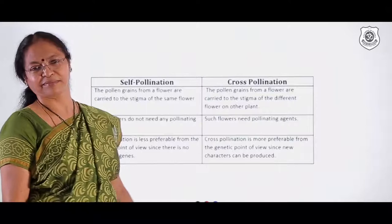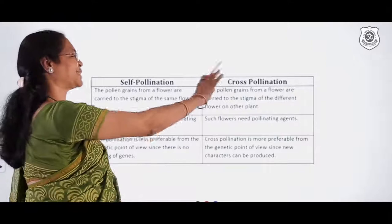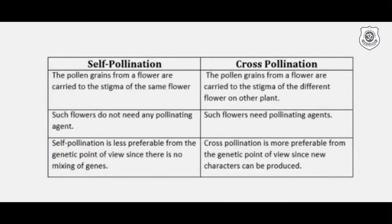What is the key difference between self and cross pollination? For self-pollination, no external agent is required. For cross-pollination, an agent is definitely required. Self-pollination is preferable because it can maintain pure lines and a homozygous condition. Cross-pollination brings about variations, and variations are the necessity for evolution to occur.